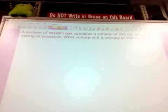So I have one example problem on the board. It says that a sample of oxygen gas occupies a volume of 250 milliliters at 740 millimeters of mercury of pressure. What volume will it occupy at 800 millimeters of mercury?